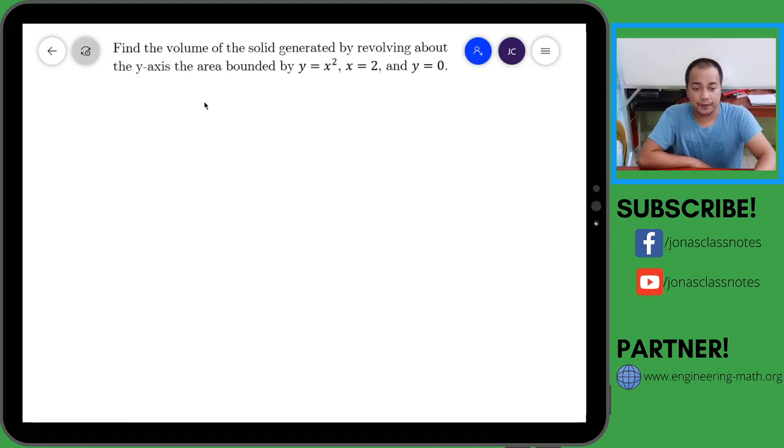Okay, so just like our previous examples we need to draw or sketch the graph of the given equations. So y equals x squared is a parabola that opens upward there.